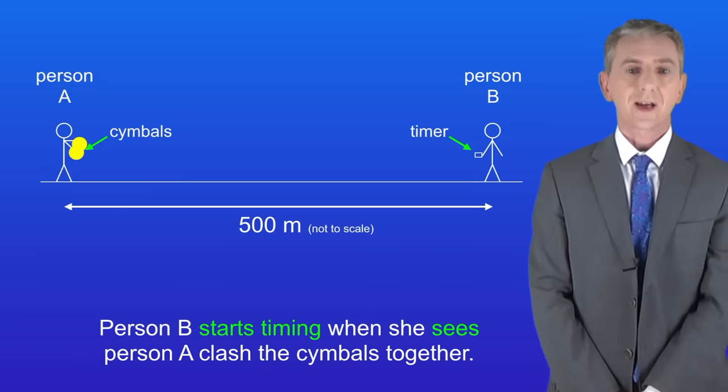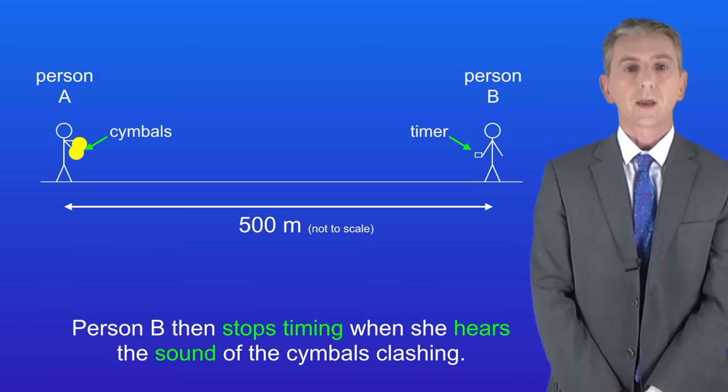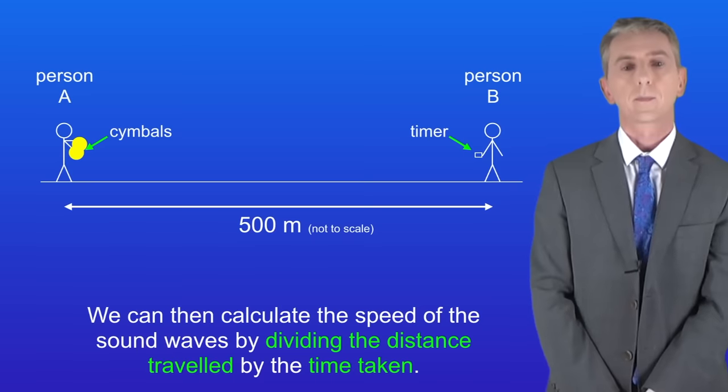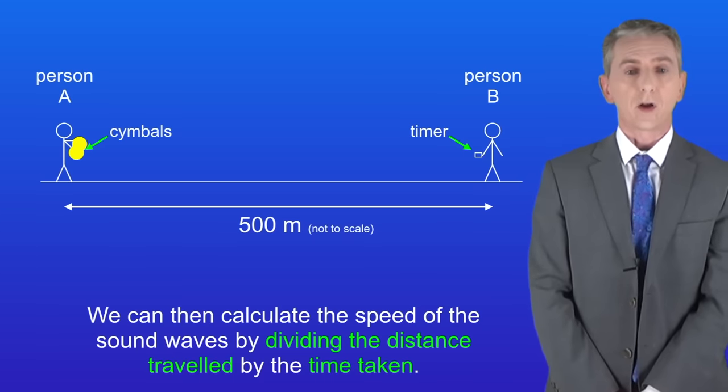Person B starts timing when she sees person A clash the symbols together. Person B then stops timing when she hears the sound of the symbols clashing. We can then calculate the speed of the sound waves by dividing the distance travelled by the time taken. Now, there are a couple of problems with this experiment.